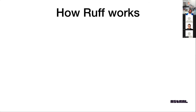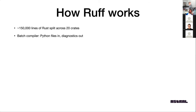Let's talk about how Ruff works. Ruff is about 150,000 lines of Rust split across 20 crates. It's structured as a traditional batch compiler — you can view it as a compiler that takes in Python source code and outputs diagnostics. So if you think about Ruff as a compiler, the compilation pipeline looks like this.